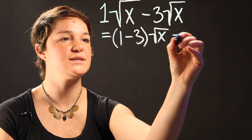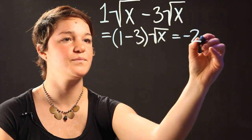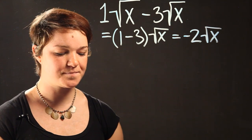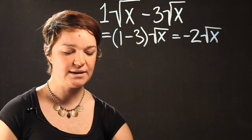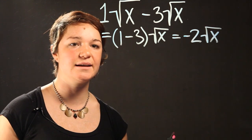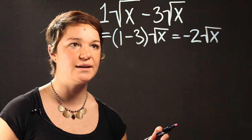So 1 minus 3 is going to equal negative 2 times the radical x. That's the answer.